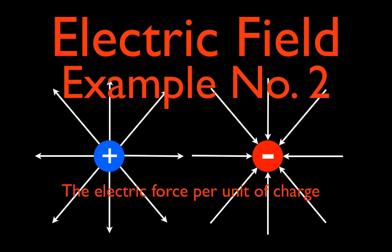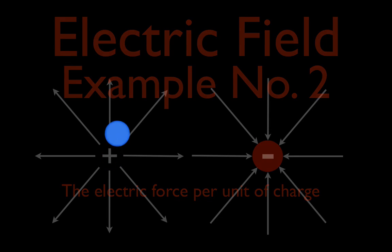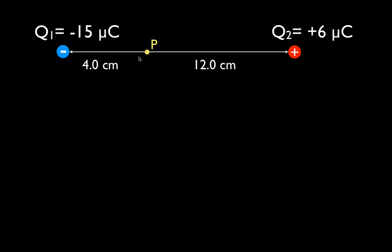In today's video we are going to do an electric field problem. We are going to calculate the electric field at point P due to Q1, which is minus 15 microcoulombs, and Q2, which is plus 6 microcoulombs. I want to point out that there is nothing right here at this point — this is just a point in space with no charge there. But we can still calculate the electric field from the other two charges at this point, and then at the end of the video we'll put some charge there and see what happens.